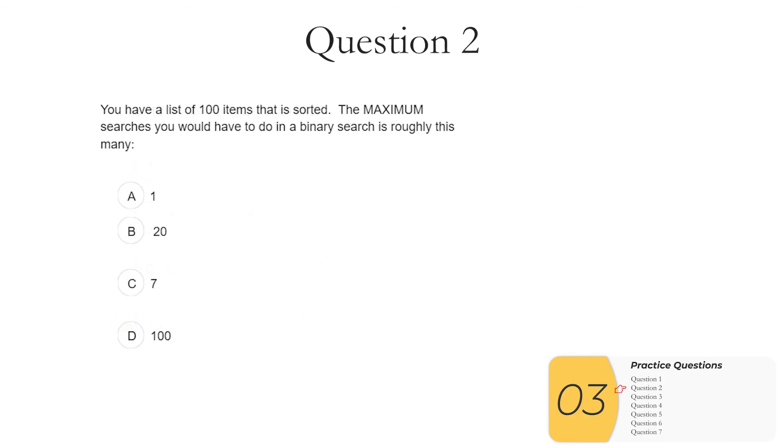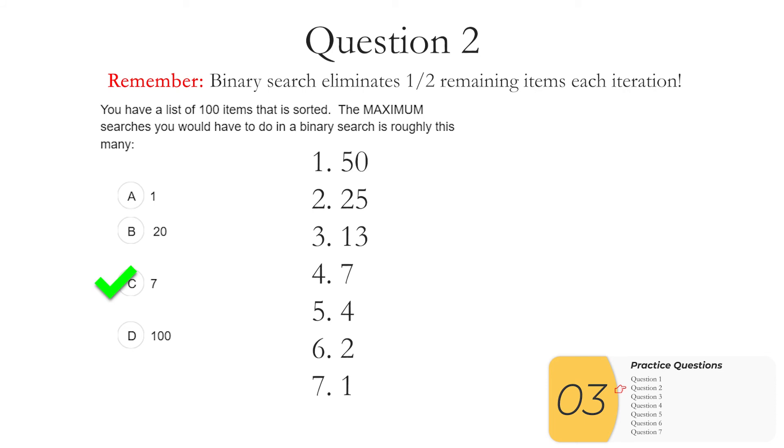Question two. You have a list of 100 items that is sorted. The maximum searches you would need to do in a binary search is roughly this many. So I've seen a lot of practice questions that look pretty much exactly like this. The numbers might be higher. It might go up to 2,000, 5,000, 10,000. You'll have to be able to do it all. And they all follow the same concept. Just remember that the binary search eliminates half the remaining items after each iteration. The first iteration is about 50 left. The second is 25, so on and so forth. Takes about seven iterations for you to get where there's no other possible. Just practice writing these out and you'll be able to solve these problems no problem.